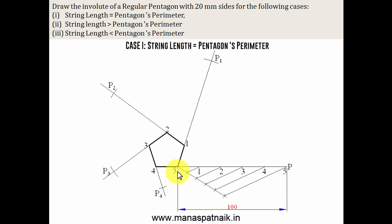And you don't need to do anything for point P as it is coinciding with 5. And here, at 5, you can have point P itself. And when you join all these fellows in proper sequence with the help of a smooth curve, this curve is popularly known as an involute. And here, what we've done is, we've taken the string length equivalent to the pentagon's perimeter. Let's jump over to case 2.